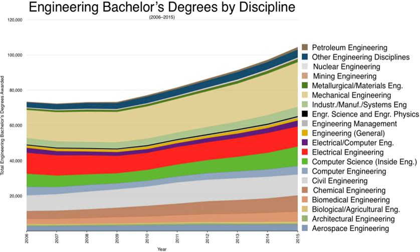Further institutions include McGill University, Dalhousie University, Ryerson University, York University, University of Regina, Carleton University, McMaster University, University of Ottawa, Queen's University, University of New Brunswick, UOIT, University of Waterloo, University of Guelph, University of Windsor, Memorial University of Newfoundland, and Royal Military College of Canada, just to name a few. Every university offering engineering degrees in Canada needs to be accredited by the CEAB, thus ensuring high standards are enforced at all universities.